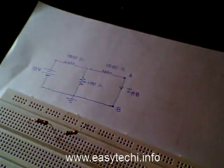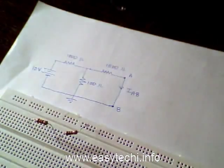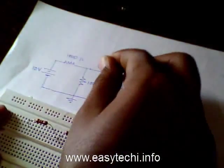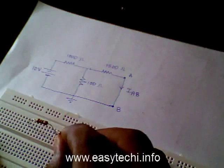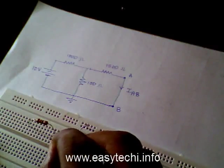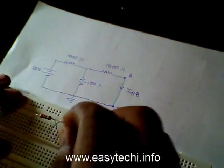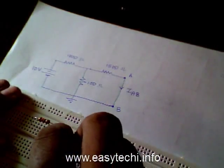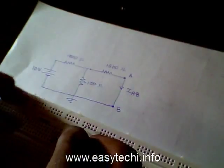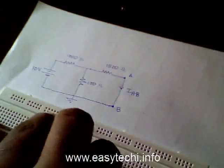Then we have a 1500 ohm resistor, which is connected to one end of the 100 ohm resistor. It must be placed here because the breadboard is vertically shorted. The other end of the 1500 ohm resistor is connected to ground.